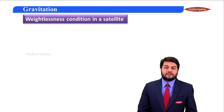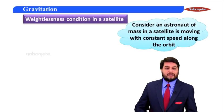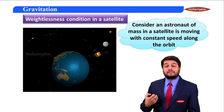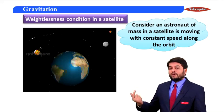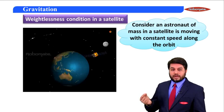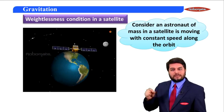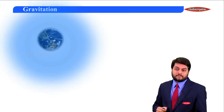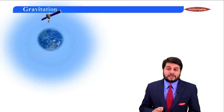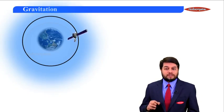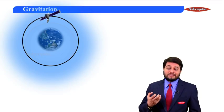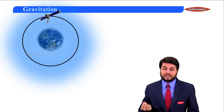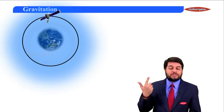Now let us understand the weightlessness condition in a satellite. Consider an astronaut of some mass inside a satellite moving with constant speed along a circular orbit — a satellite revolving inside the gravitational field of Earth. That person inside the satellite is inside the gravitational field, but still experiences weightlessness. As the satellite revolves in a circular orbit, there is a centripetal force — which is the gravitational force acting towards the center of the Earth — balanced by the centrifugal force acting in the outward direction.